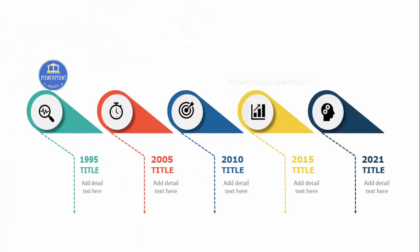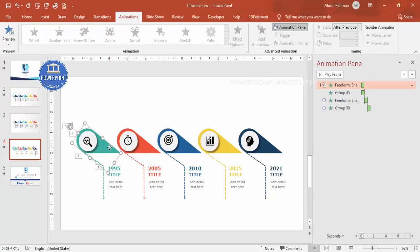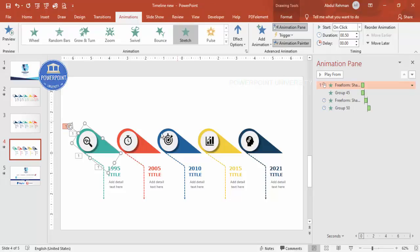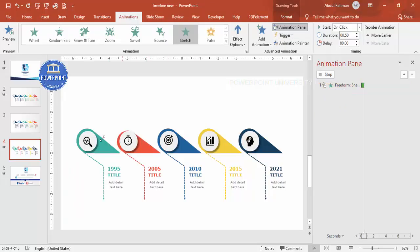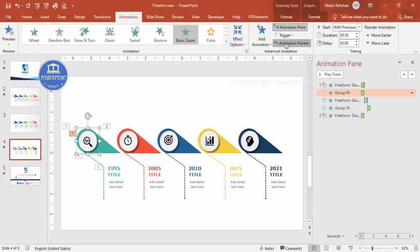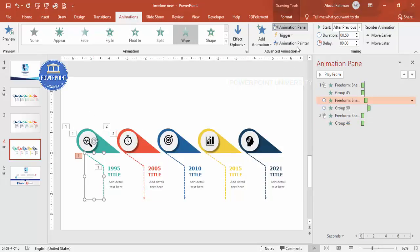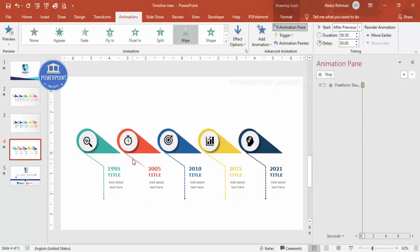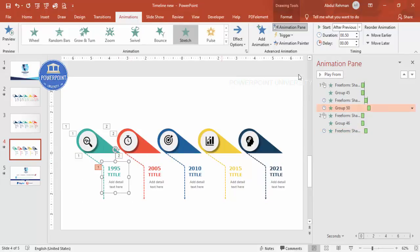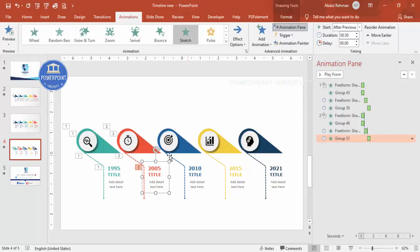The animation plays correctly. Now use the Animation Painter to copy animations to the other objects. Select the animated group, click Animation Painter, then click the next group. Repeat for the line and text of each remaining option to apply all animations consistently across all five timeline entries.